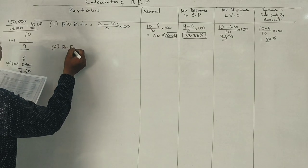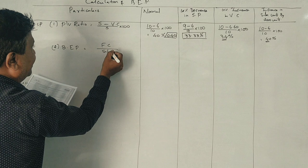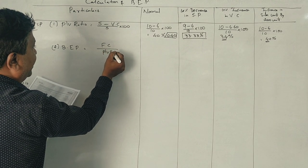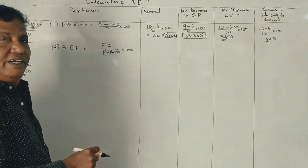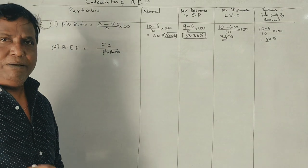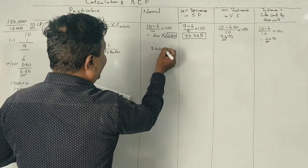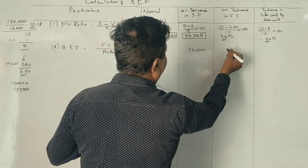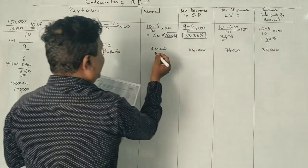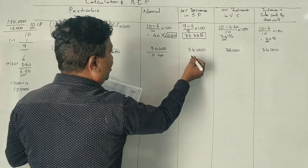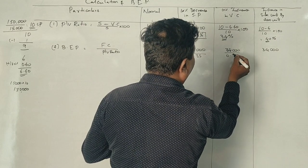Break-even point: fixed cost divided by PV ratio into 100. In all cases, fixed cost is 34,000. 34,000 divided by PV ratio 0.40. It equals 85,000.